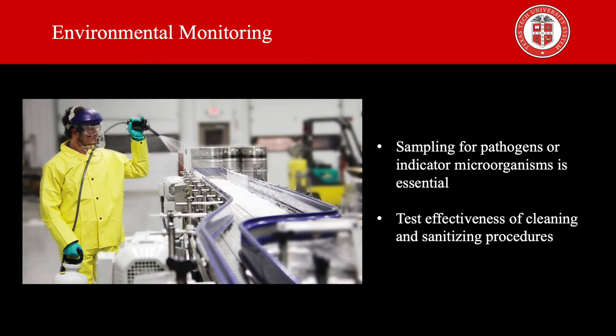Sampling for pathogens or indicator microorganisms in food contact areas during production is also essential. This offers confidence in the safety of the manufactured product. The environmental monitoring program helps manufacturers to be aware of the plant environment and to measure the efficiency of the pathogen prevention program. Furthermore, it is not only critical to test for pathogens but also for the overall effectiveness of cleaning and sanitizing procedures.